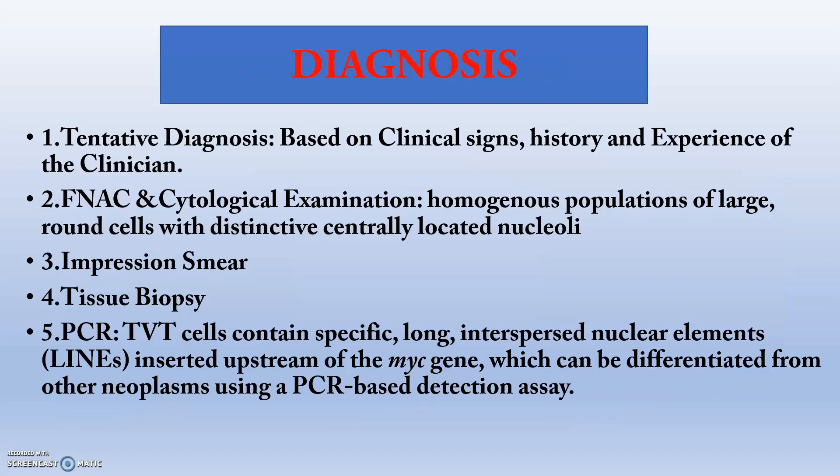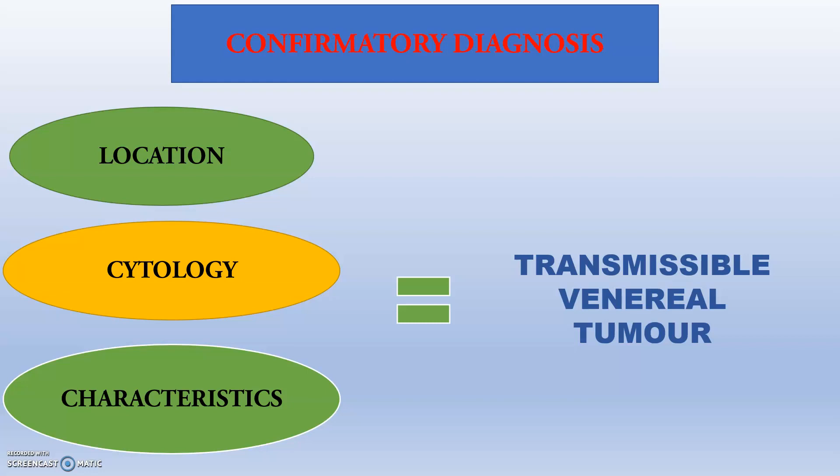For diagnosis, tentative diagnosis is based on clinical signs, history, experience of the clinician, and fine needle aspiration cytology. Cytological examination reveals homogeneous populations of large round cells with distinctive centrally located nucleoli. Impression smear can be taken, along with tissue biopsy and PCR. An important point regarding PCR: TVT cells contain a specific long interspersed nuclear element — LINES — inserted upstream of the MYC gene. We can go for MYC gene PCR detection. Confirmatory diagnosis is made based on the location of the tumorous mass, FNAC cytology, and staining techniques.